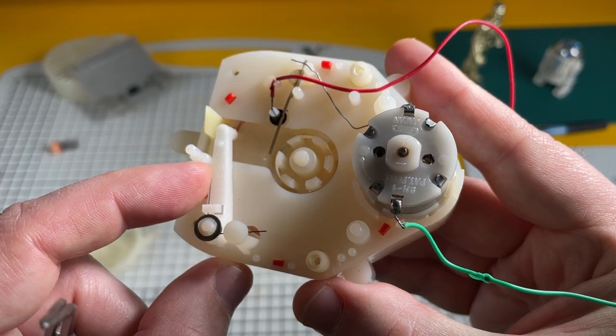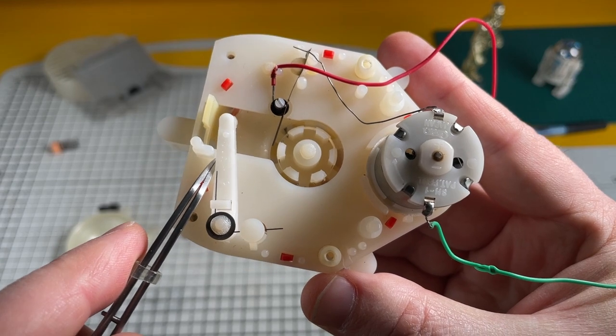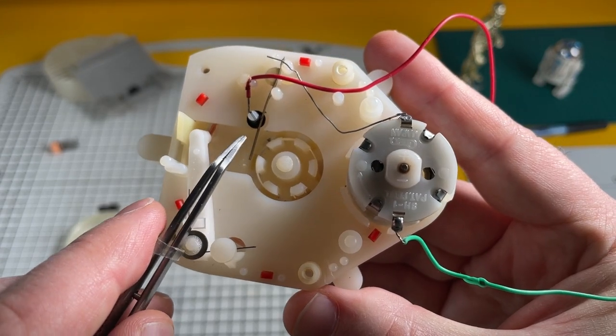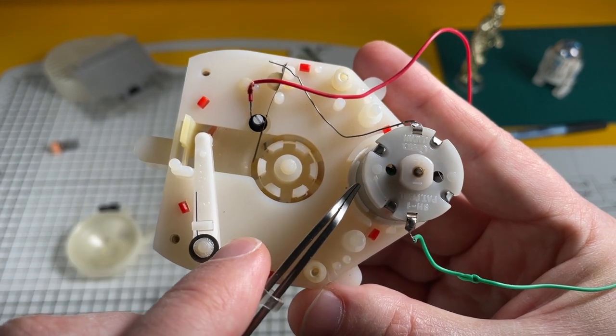And as that record spins it drags across this arm and eventually engages with this metal strip here. And as it does so it breaks the circuit and the motor stops.